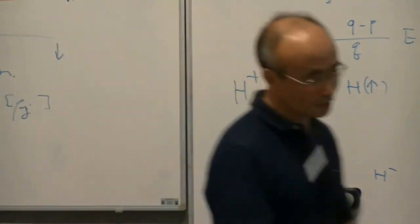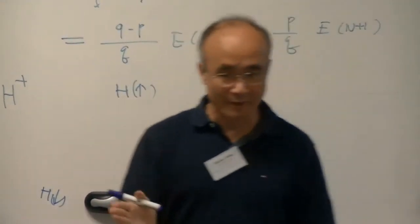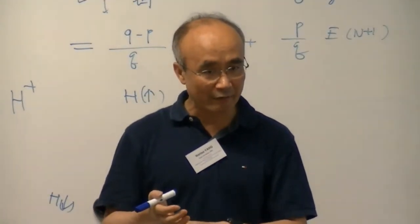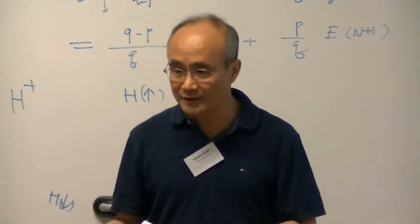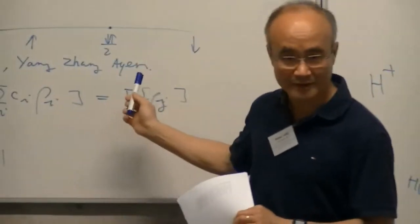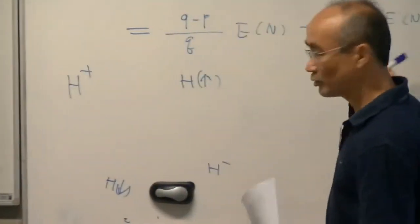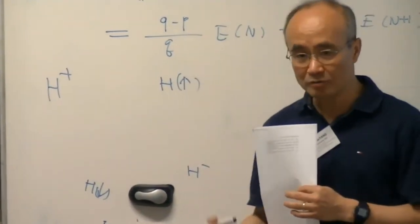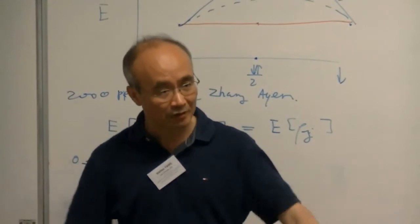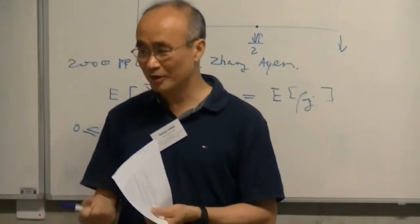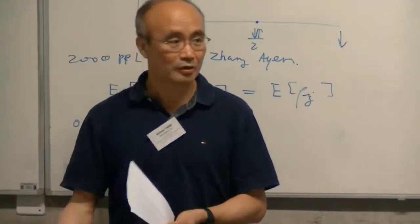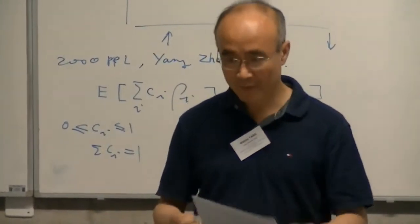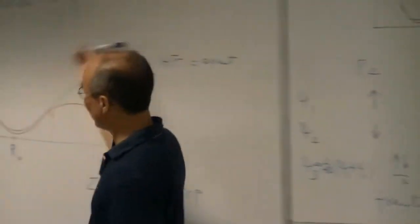We analyzed two systematic errors: the delocalization error associated with fractional charge, and the static correlation error associated with fractional spin. These can be combined into a two-dimensional picture. When functionals fail these conditions, you see failures in chemical applications, band gap calculations, and many other properties. These are critical conditions that I also try to address in functional development, and that's my next topic related to derivative discontinuity.